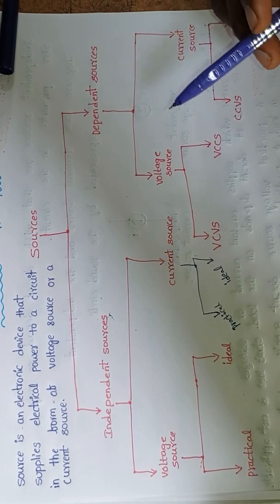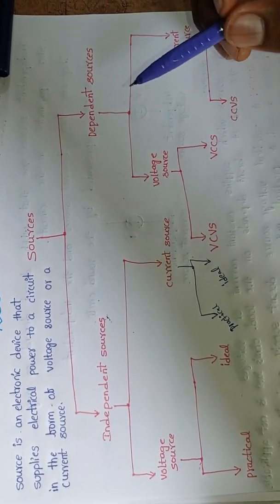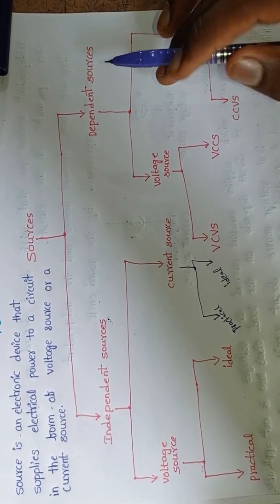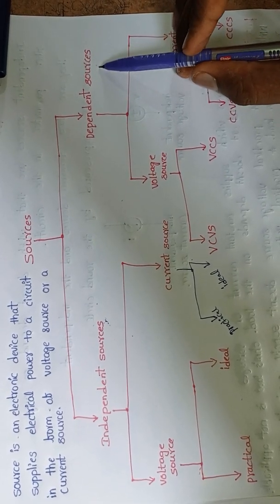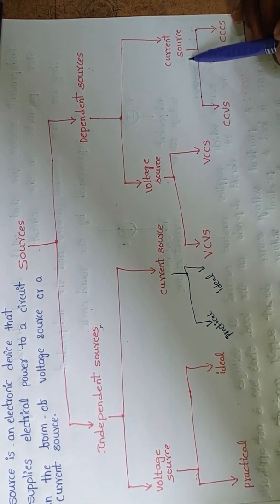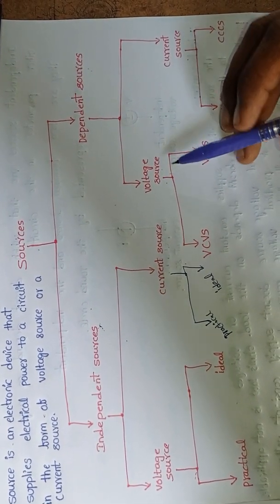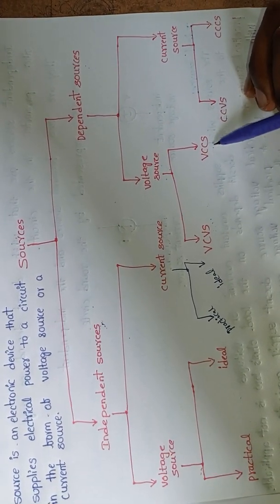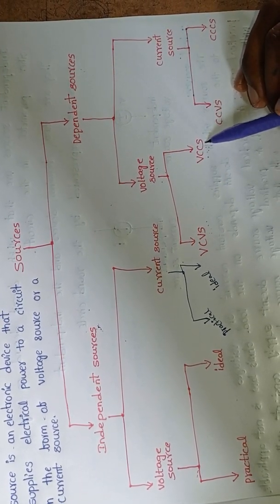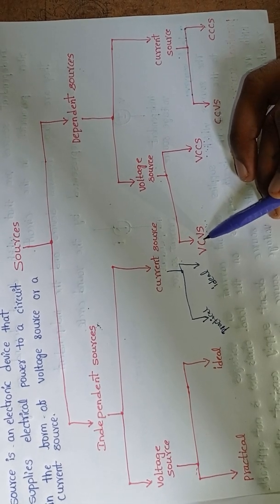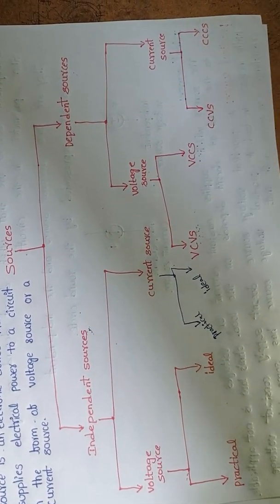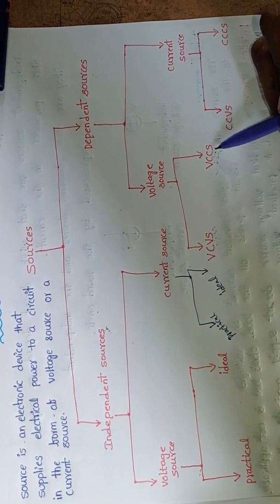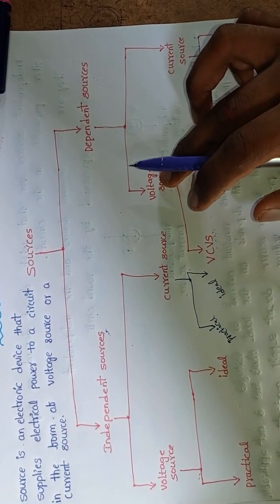Dependent sources are the sources whose value depends on the behavior of circuit elements — based on the circuit elements, the value of the source will change. Dependent sources are again classified into voltage source and current source. The dependent voltage sources are: VCVS, which means voltage controlled voltage source, and VCCS, which means voltage controlled current source.